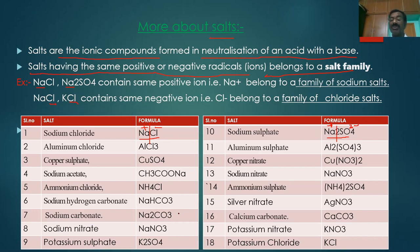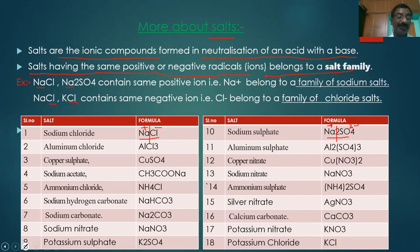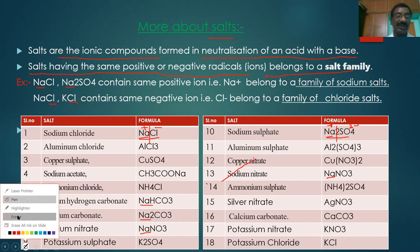In this table there are many salt families. For example, take the sodium family: Sodium Chloride, Sodium Sulphate, Sodium Carbonate, Sodium Bicarbonate, Sodium Hydrogen Carbonate, Sodium Nitrate — all these are the family of sodium salts, simply the sodium salt family.